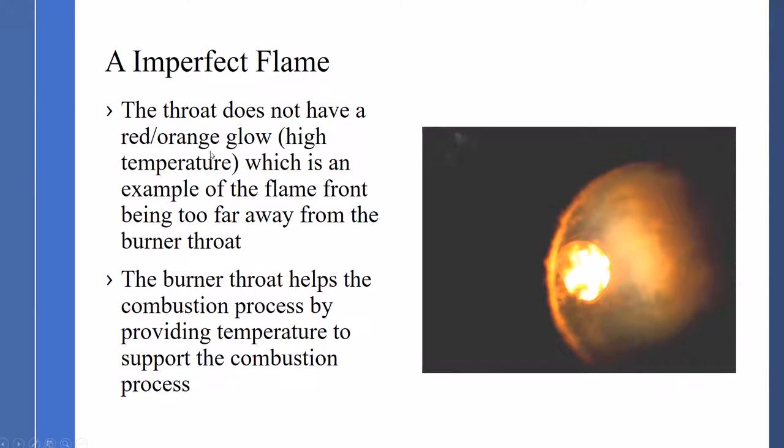In an imperfect frame, the throat does not have a red-orange glow or the high temperature. The flame temperature here is about 2800 degrees. With this high temperature, the burner throat should be that red-orange color. The flame front being too far away from the burner throat. If the flame front is too far away, the radiation or heat does not get to the burner throat, which does not heat it up evenly.